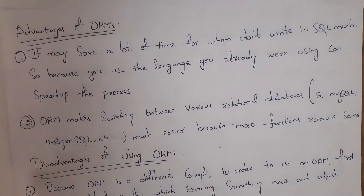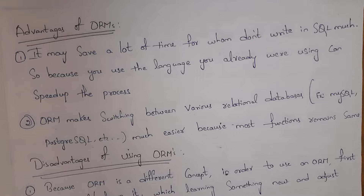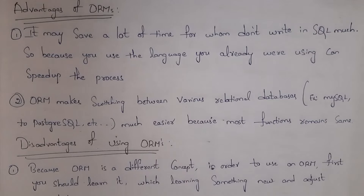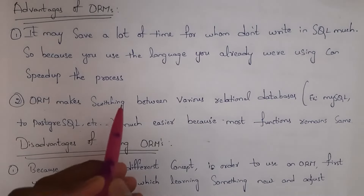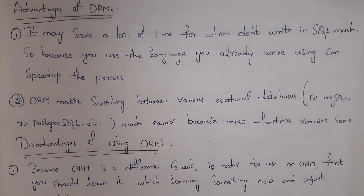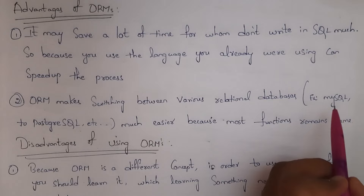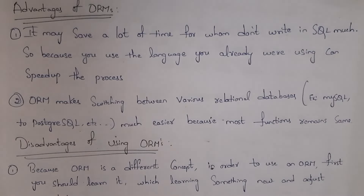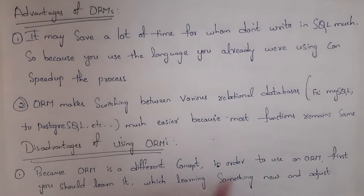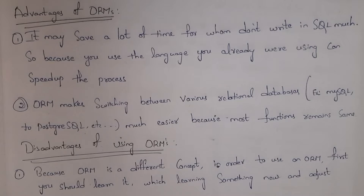These are the advantages of ORMs. First advantage: many people don't know SQL, so there is no need to learn SQL — directly using Python you can perform various operations on a database, which saves time. Second advantage: ORM makes switching between various relational databases much easier because most functions remain the same. For example, switching from MySQL to PostgreSQL is very easy.